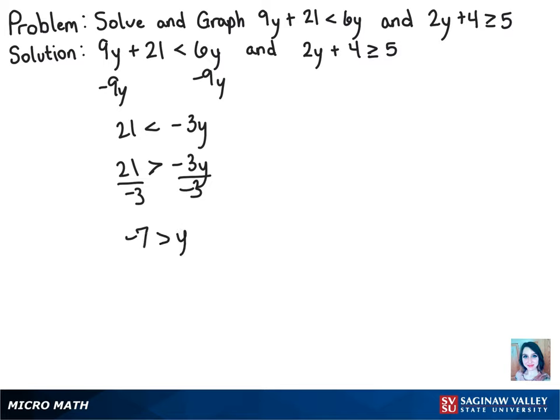All right, so let's look at the inequality on the right side now. We can subtract 4 from both sides. And that will get us 2y is greater than or equal to 1. And now we can divide both sides by 2 so that we get y is greater than or equal to 1 half.